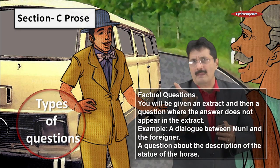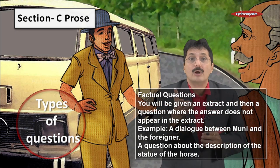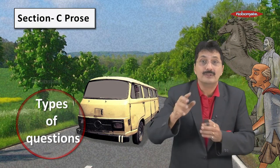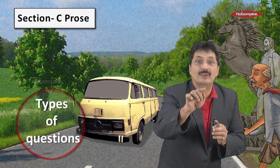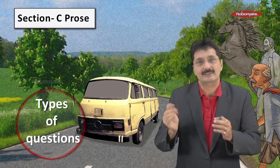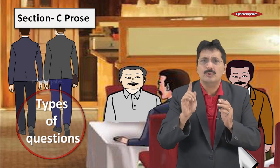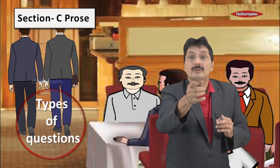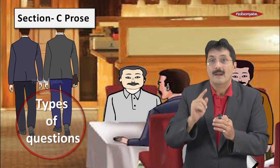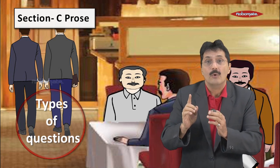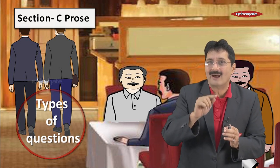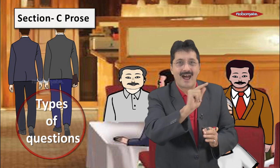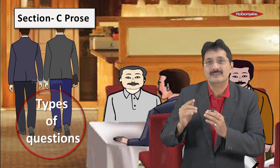For factual questions, you may be given an extract from a chapter and asked about something that does not appear in that extract. For example, it may be a dialogue between Muni and the foreigner, but a question about the description of the statue of the horse may be asked — which is not in that extract. In 'Hearts and Hands,' a question may be asked whether two side characters are from the West. The tendency is to say yes, but remember there is a line where one of them remarks 'some of these western fellows are all right,' which reveals these characters are not from the West.